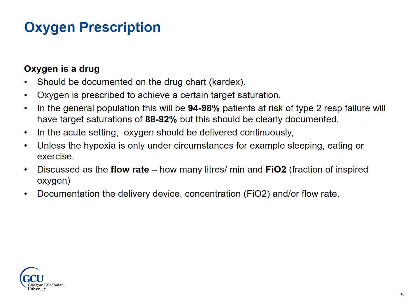Oxygen is a drug and should be prescribed to meet target saturations. These target saturations should be 94-98% in the general population, and for patients at risk of type 2 respiratory failure — so those with chronic COPD — these should be 88-92%, but this should be clearly documented in the notes and the patient may carry an alert card. In the acute setting, oxygen should be delivered continuously unless hypoxia is only under certain circumstances, for example sleeping or exercise.